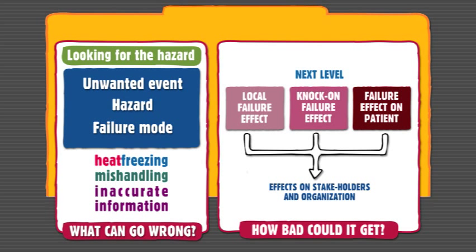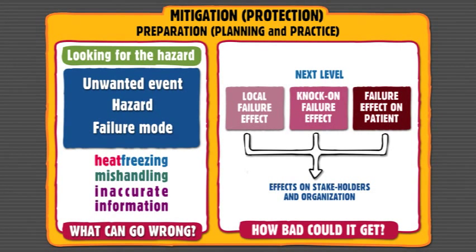There's a second option available to you, and that is mitigation or protection. Mitigation is different from control because with mitigation, you are assuming that the unwanted event is going to occur — and what you are trying to do is lower the impact of that unwanted event on the thing of value. The third option is preparation, which can include planning and practice. Planning would be creating a contingency plan, and preparation would also involve practice — trying that plan out and seeing how it works to make sure the plan is adequate and that you are ready to implement it if needed.